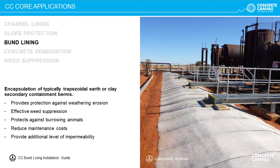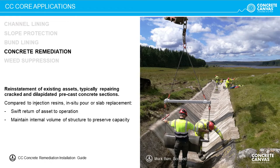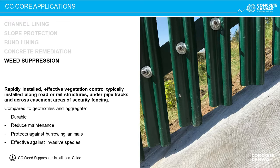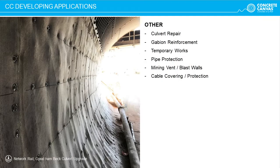CC maintains the critical height of secondary containment berms from weathering erosion whilst providing weed suppression and protection against burrowing animals. CC Hydro can also be used to upgrade the impermeability of a bund. CC can also be used to remediate existing concrete assets to upgrade their operational service life and reduce maintenance costs. As a thin product, CC maintains the internal volume of a channel, culvert or lagoon, preserving hydraulic capacity. The final core application is weed suppression — CC effectively prevents root-growing vegetation and is able to suppress aggressive invasive species such as Japanese knotweed.